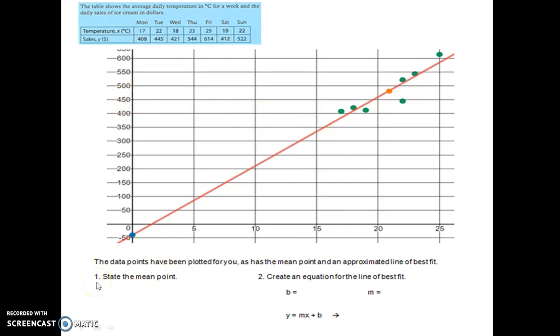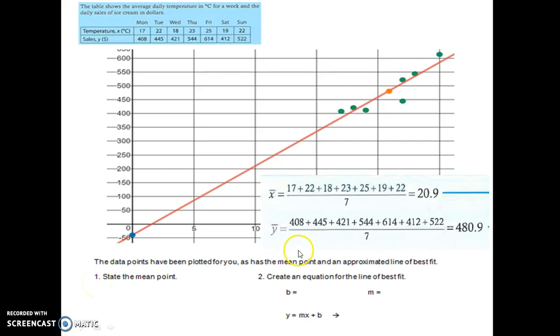First of all, state the mean point. We already calculated this. The mean point is just calculated by finding the mean of the x values, so the mean of the temperature values. Seven of them added up divided by seven. It's an average. And then we find the mean of the y values, which are the ice cream sales. And we get this number. Those two make a point. That point has been graphed in the graph. The point is 20.9, 480.9. The mean point is right here in orange.